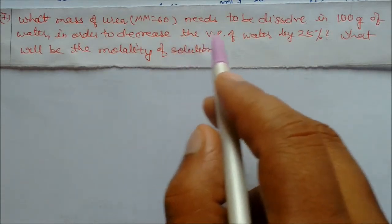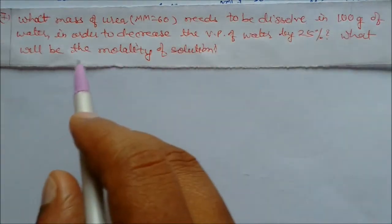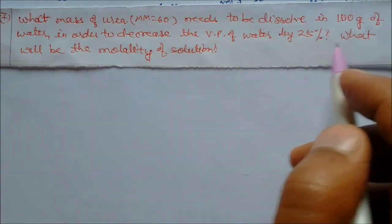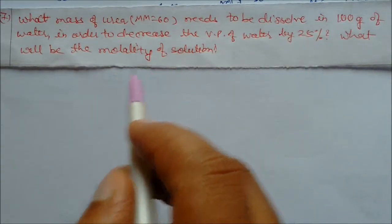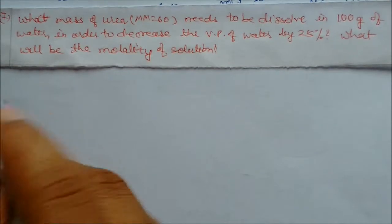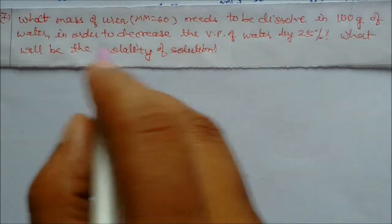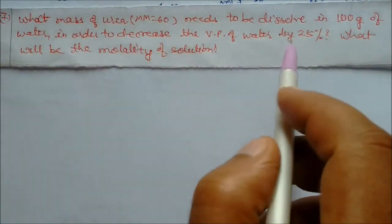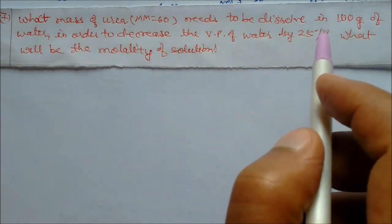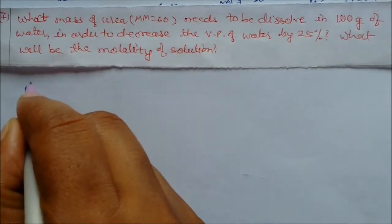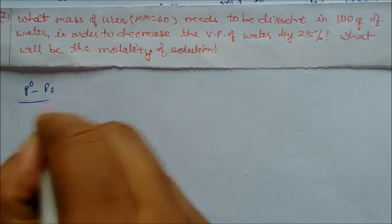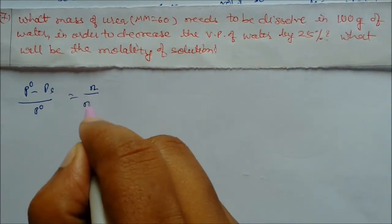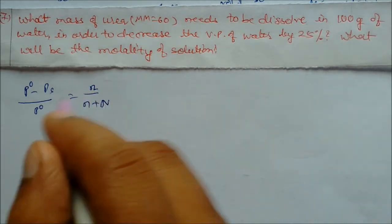What mass of urea needs to be dissolved in 100 grams of water in order to decrease the vapor pressure of water by 25 percent? What will be the molality of the solution? The weight of water is given and the vapor pressure decreases by 25 percent. Using the formula P naught minus P_s by P naught equals N by N plus capital N.